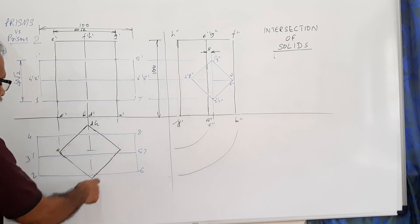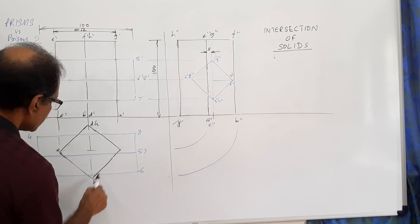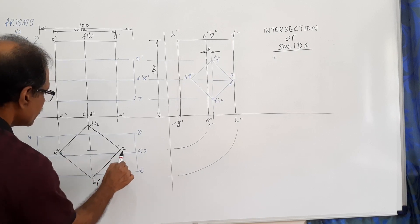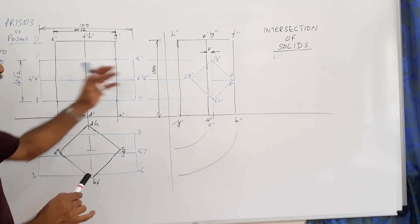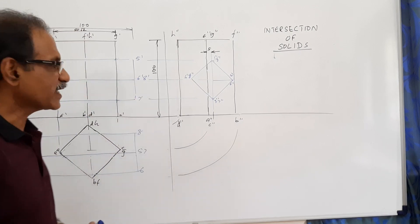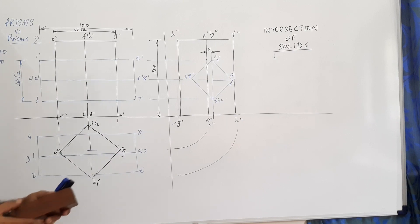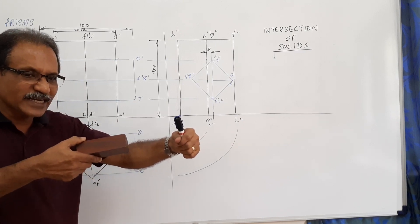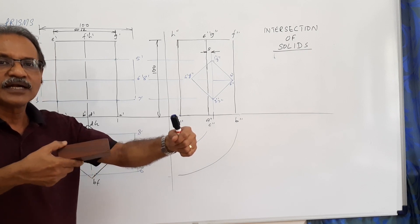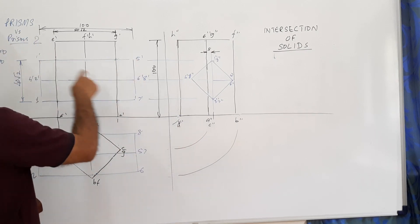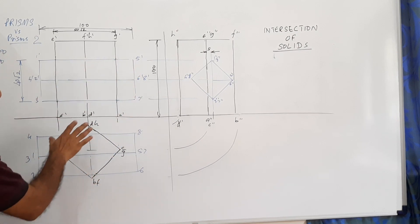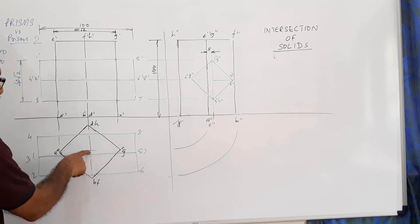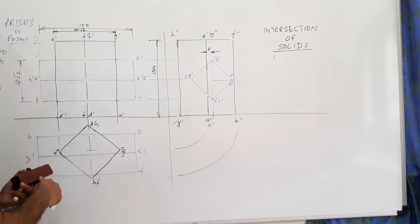The plan of the vertical prism is the same: A, B, C, D, E, F, G, H and so on. The elevation of the vertical square prism is also the same. For the horizontal square prism, instead of going straight through, it is shifted 5 mm away. This does not make any difference in the elevation - it remains 1-dash through 8-dash - but in the plan the whole thing is shifted down. The center of the horizontal prism is offset by 5 mm from the vertical prism center.